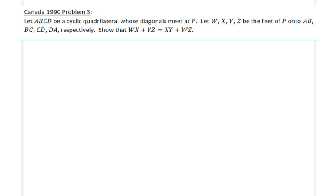Hello everyone, in this lecture we will be going over Canada 1990 problem number three. Let ABCD be a cyclic quadrilateral whose diagonals meet at point P. So let's go ahead and draw this picture.